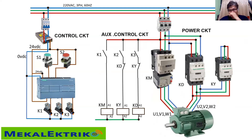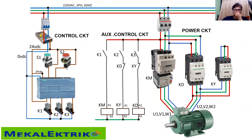In this circuit, you have a control circuit. The PLC has three relays on the output and two push buttons — the start and the stop, S1 and S2. We have a 24 volts DC power supply connecting to a control circuit breaker, so we have 24 volts going to the power of the PLC.